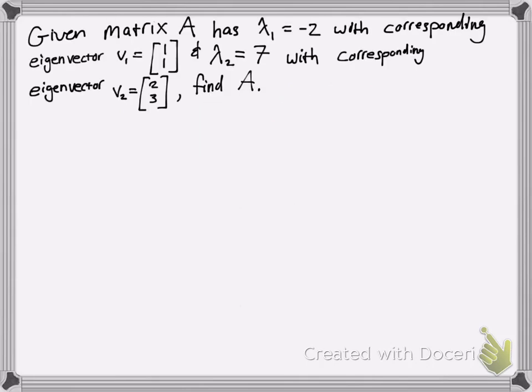Here's an example. You're given that matrix A has eigenvalue -2 with corresponding eigenvector [1, 1], and eigenvalue 7 with corresponding eigenvector [2, 3].